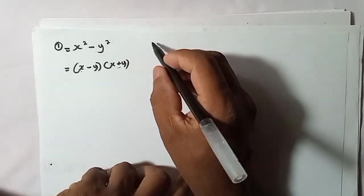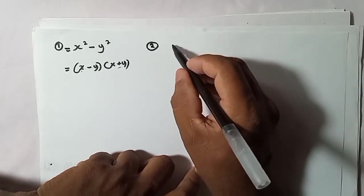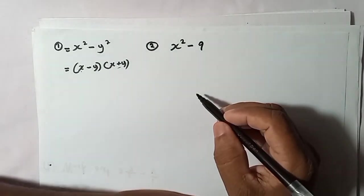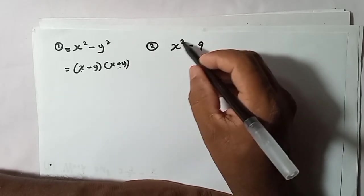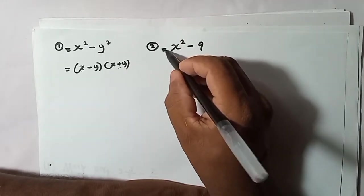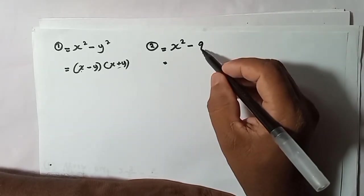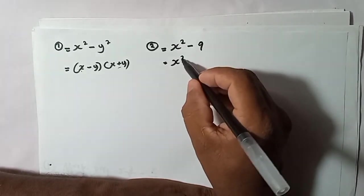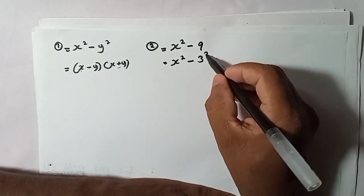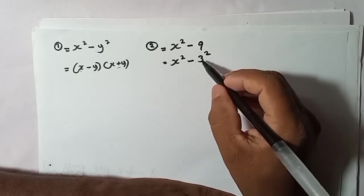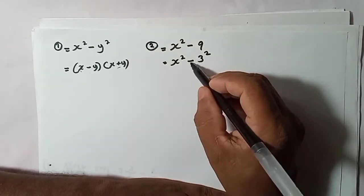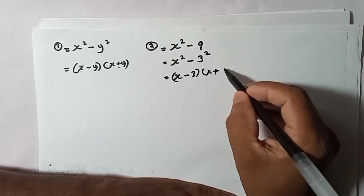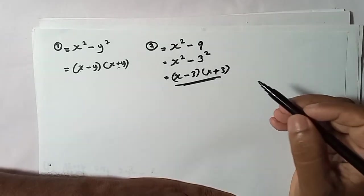Now let's look at an example. If you are given x squared minus 9 and asked to factorize, you need to write 9 as a square. We know 9 equals 3 times 3, so 9 is 3 squared. Now you have x squared minus 3 squared — difference of two squares — so the answer is x minus 3 times x plus 3.